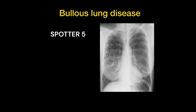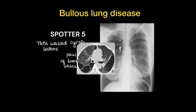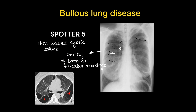This is a case of bullous lung disease. Here the walls of the thin bullae are outlined on chest x-ray. Bullae are thin-walled cystic lesions in the lung which are air-filled, and on x-ray they show paucity of bronchovascular markings. On CT of the same patient, the bullae can be clearly seen.